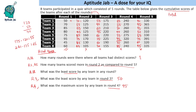How many teams scored more in round 2 compared to round 5? Comparing round 2 versus round 5: 70 vs 90 — not more in round 2. Then 55 vs 95, 65 vs 95, 45 vs 50, 85 vs 55 — this one is more in round 2. Then 75 vs 75 — equal, so we don't count it. Then 85 vs 60 — more in round 2. And team 8: 45 vs 95 — not more. So there are just 2 such teams.